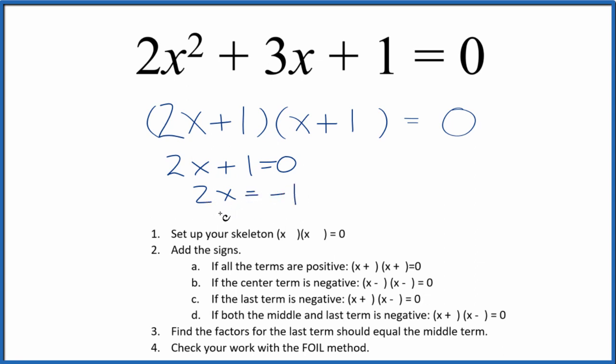And then we'll divide both sides by 2. x would equal a negative 1 half. So if we put negative 1 half in for x here, we do the math, all this will equal 0.